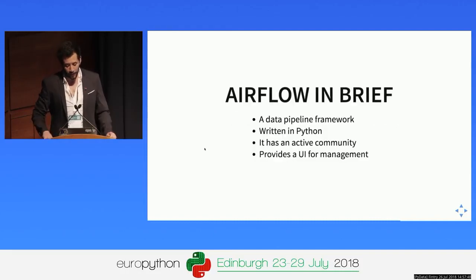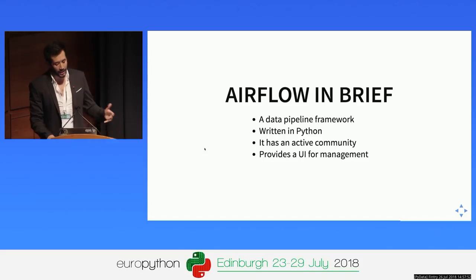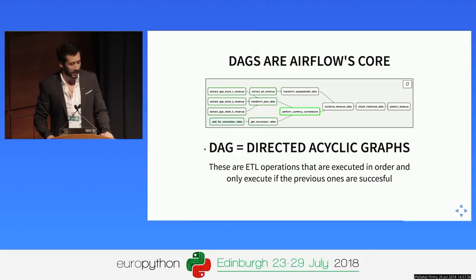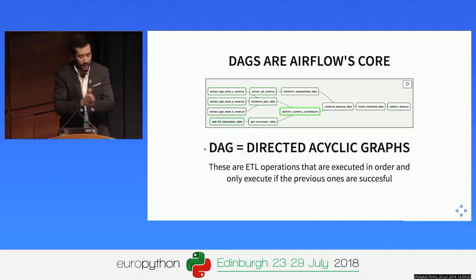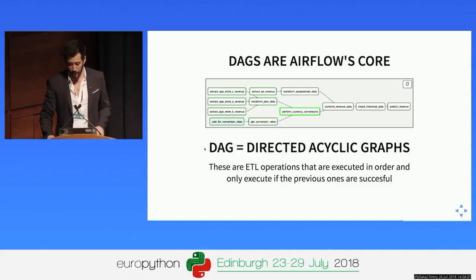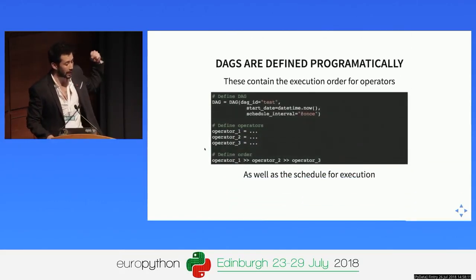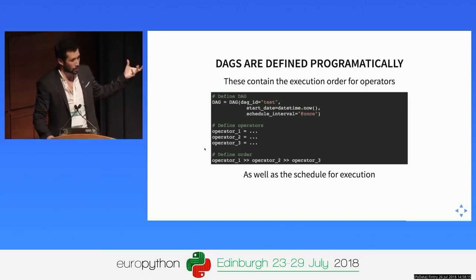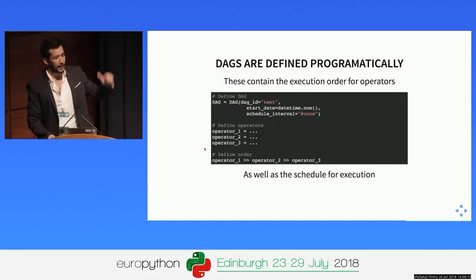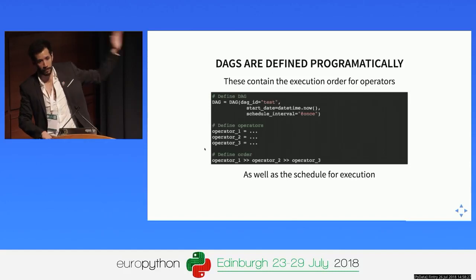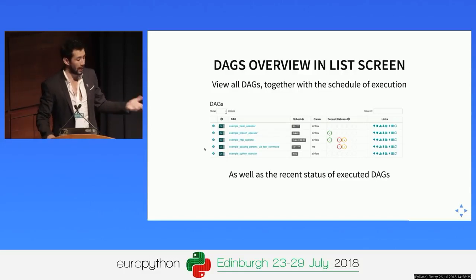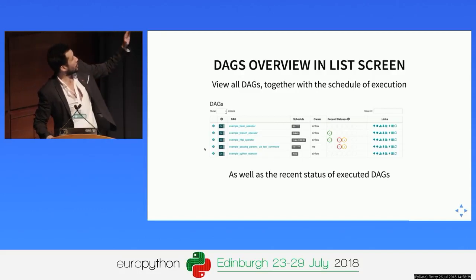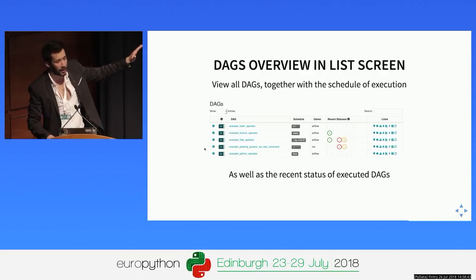Airflow in brief is a data pipeline framework written in Python with an active community and a UI for management. The core of Airflow is DAGs — Directed Acyclic Graphs — which are basically ETL operations executed in a specific order, where each one only executes if the previous one succeeded. The DAGs are defined programmatically: you specify the DAG name, start date, and schedule in cron format, then define the ETL operations and the order of execution. You can see all defined DAGs in a list overview with execution information — which ones failed, which are currently executing, et cetera. The design isn't the most beautiful, but it's very functional.